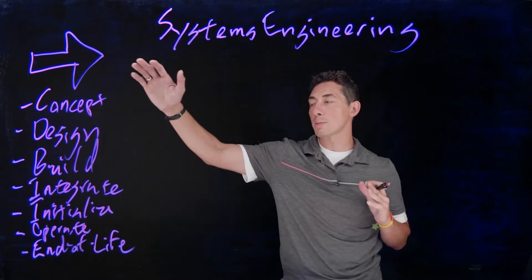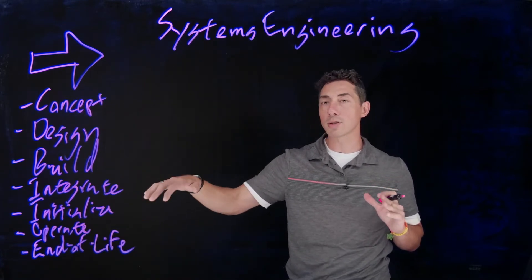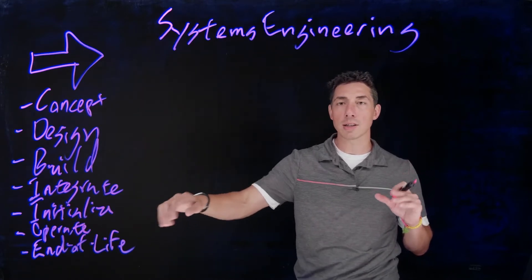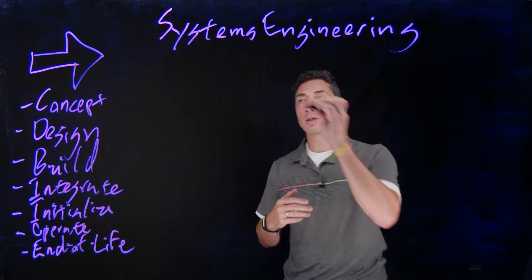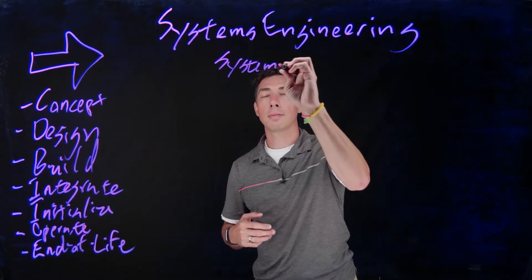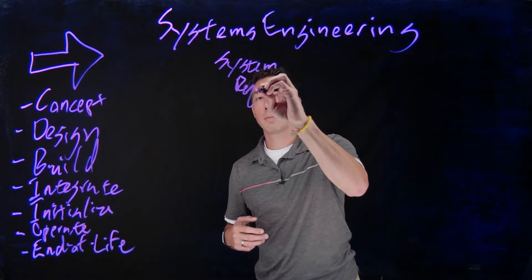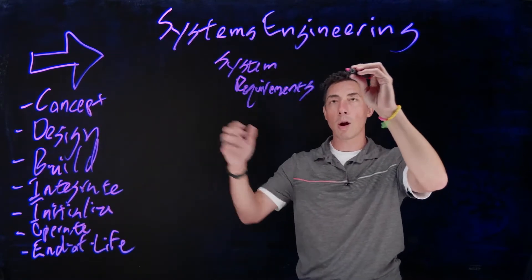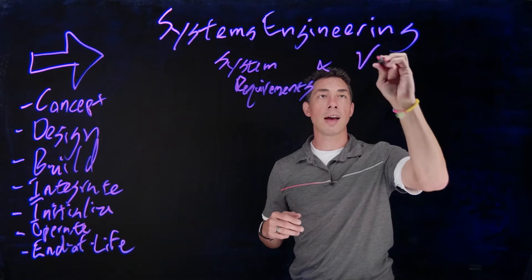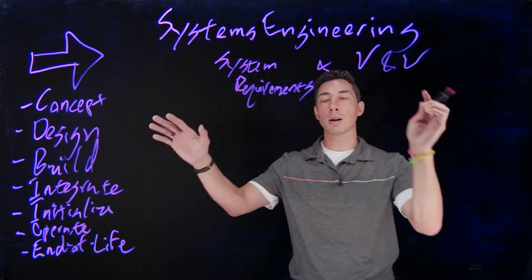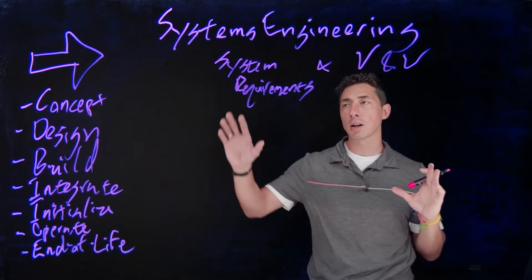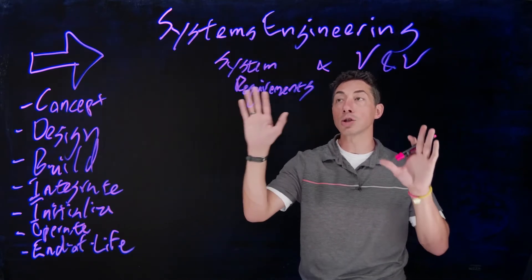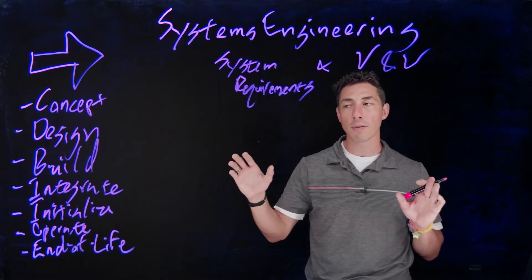Every system is going to go through this general life cycle. And a system engineer is going to manage all of these life cycle transitions through two things. You've got your system requirements over here, and you've got your validation and verification over here. And those are the two primary tools of a systems engineer. You're going to manage all of these different transitions using these system requirements and the validation and verification of them.